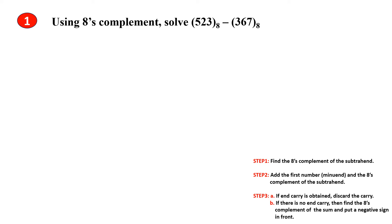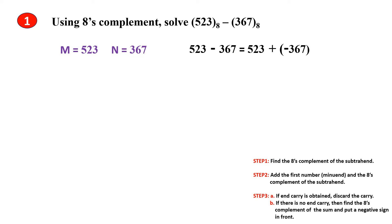Problem 1: Using 8's Complement, subtract the given two Octal numbers. So, m is 523 and n is 367. m minus n can be written as m plus minus of n. Since minus n is a negative number, we use complements to represent negative numbers. So, as per Step 1, we have to find the 8's Complement of the Subtrahend, which is 367.